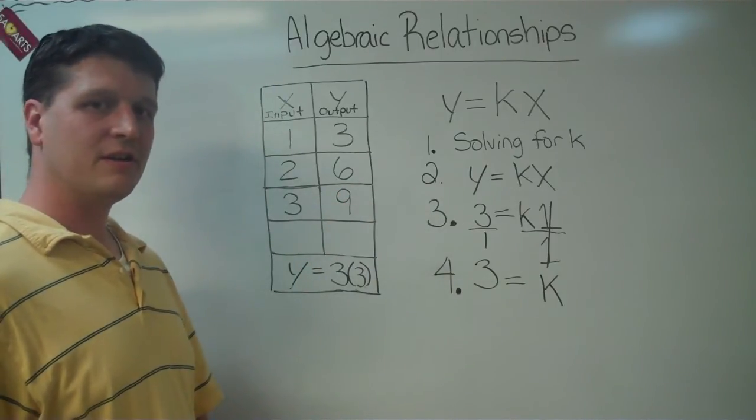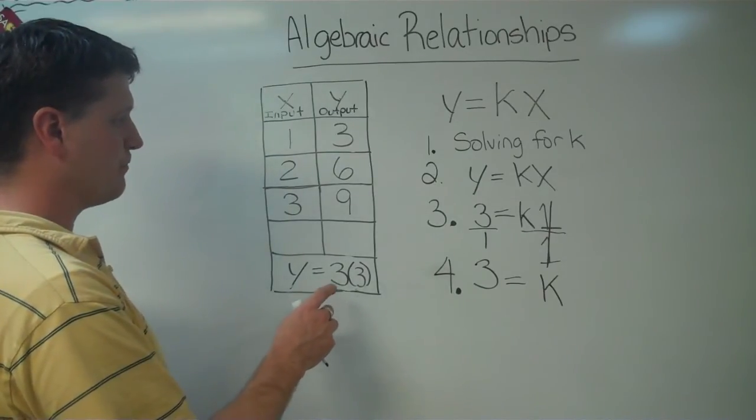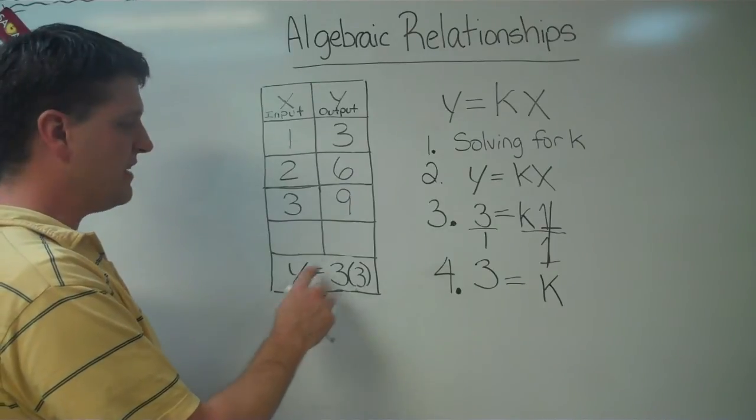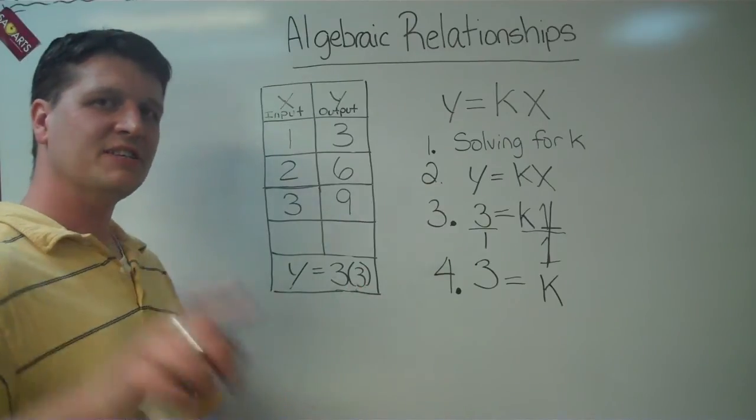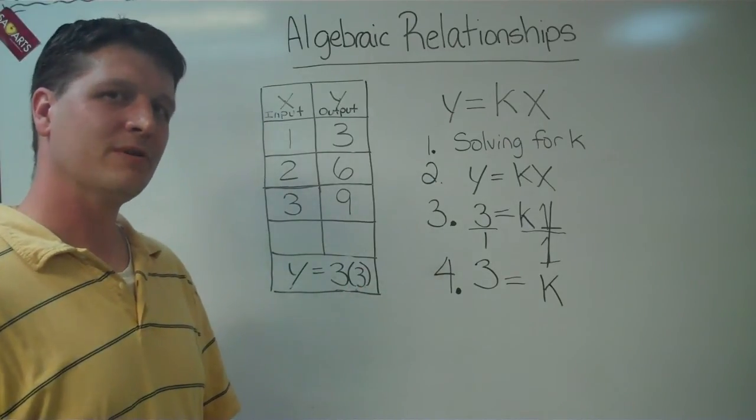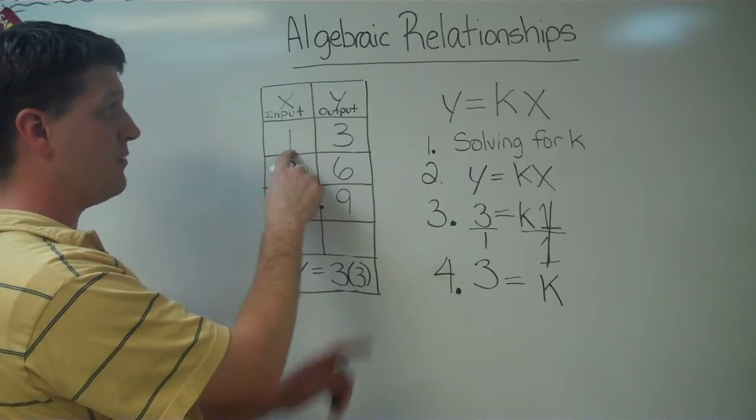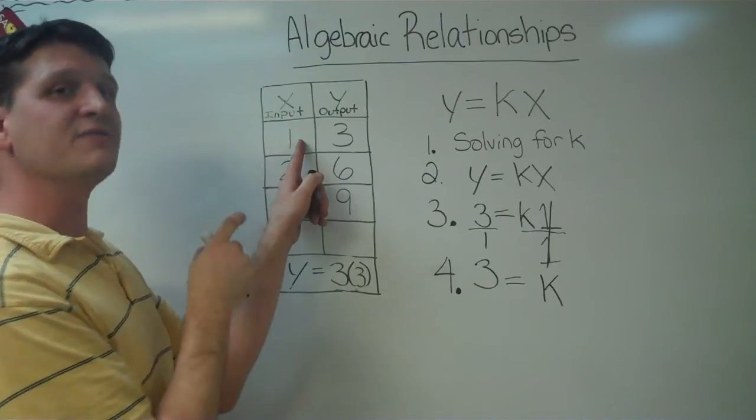Basically, what this is saying is that whatever I get for y is going to be 3 times as big as what I have for my x. Let's find out if that's true. We've got our x value, and now we said whatever our y is is going to be 3 times the size of our x value.